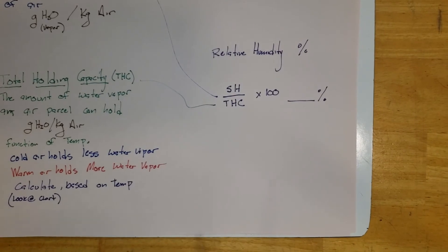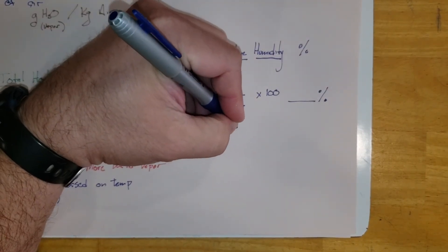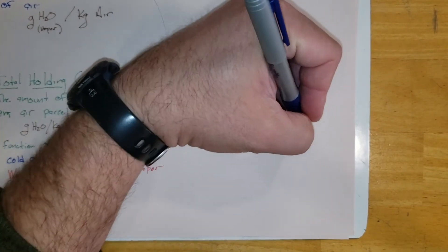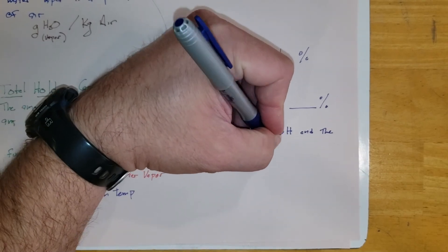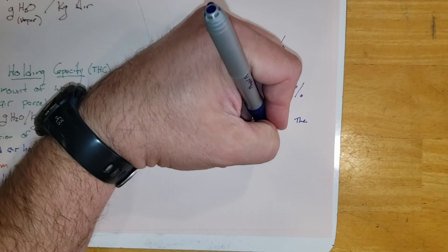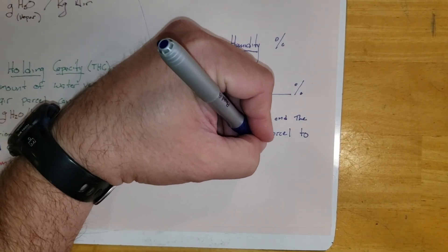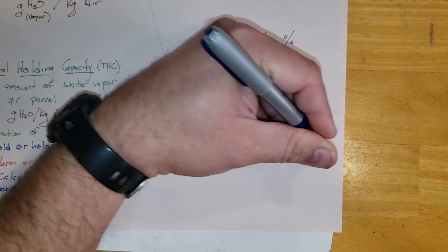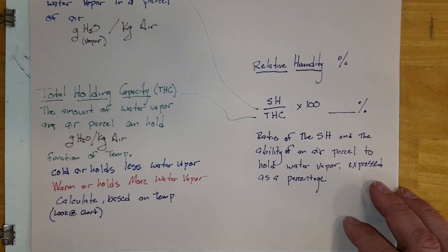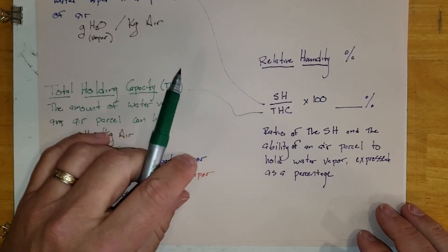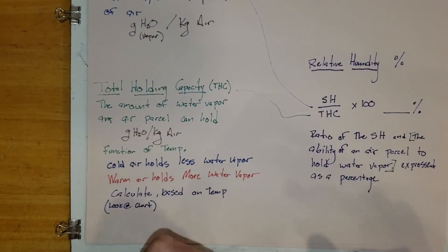So it's based on the amount of water vapor that is in the air compared to how much water vapor the parcel can hold. Throw those guys together into the equation and we're able to calculate our relative humidity. If we needed to define that, we'd probably say that ratio of the specific humidity and the ability of an air parcel to hold water vapor expressed as a percentage. We could say the ratio of the actual amount of water vapor in the parcel there and the ability of an air parcel to hold water vapor. That's all going to be our total holding capacity expressed as a percentage.